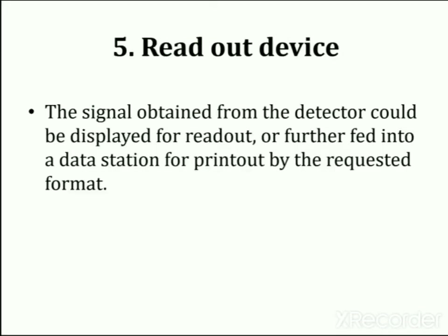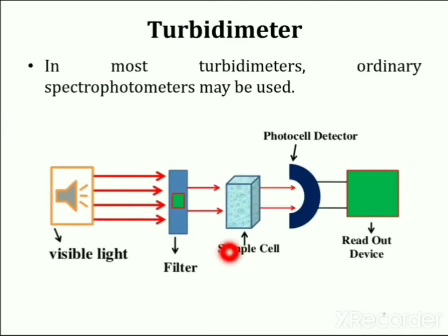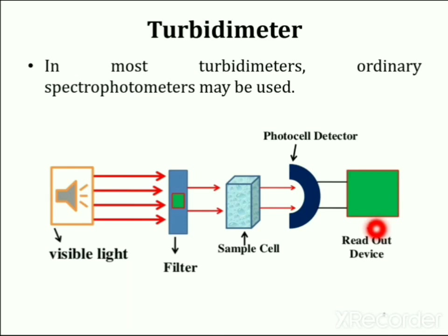The last part of the instrument is the readout device. The signal obtained from the detector can be displayed for readout or further fed into a data station for printout in the requested format. The assembly of a turbidimeter includes a light source, filter, sample cell, detector, and readout device. A turbidimeter is a portable or installation instrument to measure suspended particles in a liquid or a colloidal gas, and it measures those particles with a light beam and a light detector set at 90 degrees from the original beam.